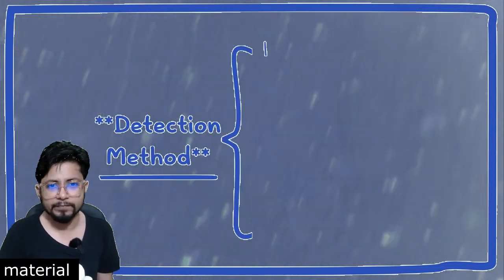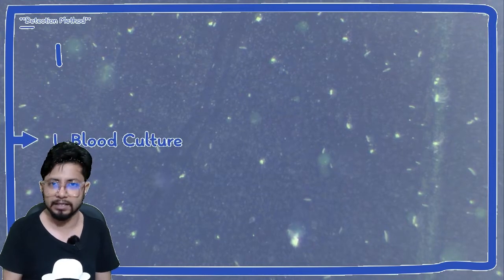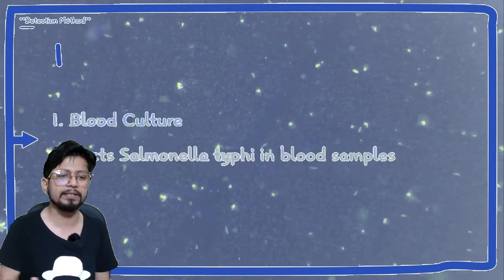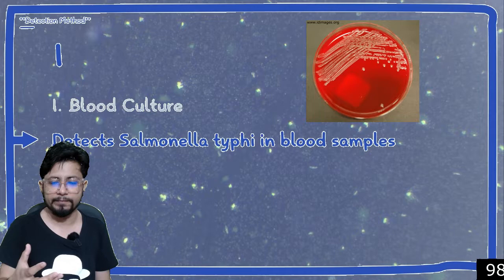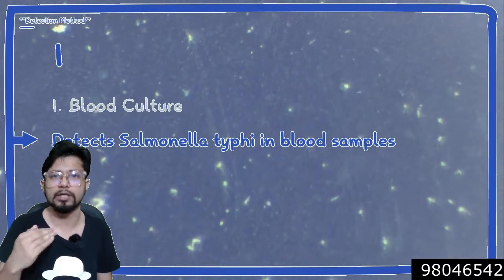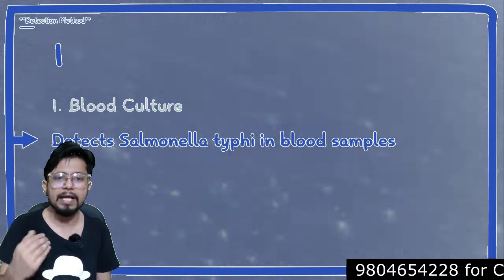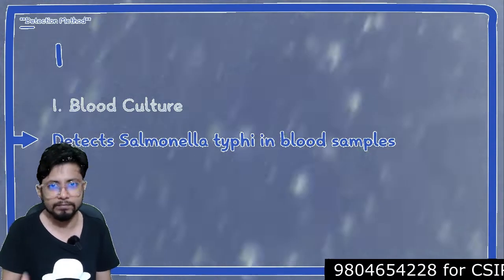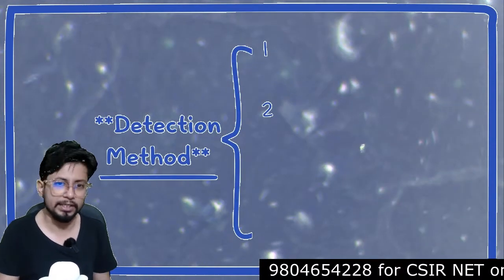There are four methods to detect Salmonella typhi in a patient specimen. Method one is blood culture: blood is taken from the patient and cultured, giving non-lactose fermenting colonies that confirm the presence of Salmonella typhi in the patient's blood.